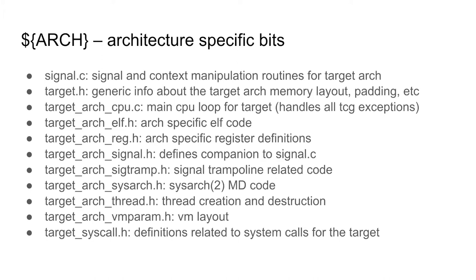Similarly, there's a long list of architecture-specific files. How ARM delivers signals differs from how x86 does — which registers need to be set for thread creation or switching, VM layout details. All of that has both an OS-dependent and an architecture-dependent component. The last important file is syscall.h, which contains the glue necessary to perform system calls on each particular architecture.